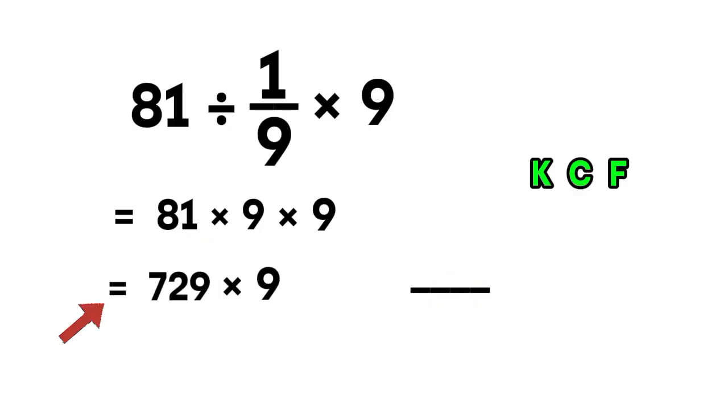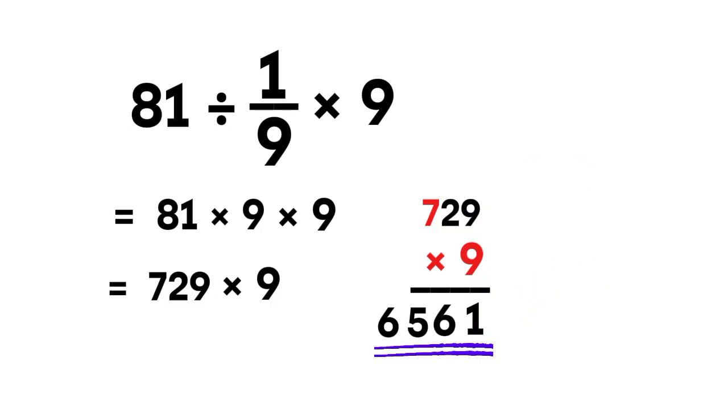Next, 729 times 9. 9 times 9 is 81. Write 1, carry 8. 9 times 2 is 18. Add the carried 8, we get 26. Write 6, carry 2. 9 times 7 is 63. Add the carried 2, we get 65. So the final answer is 6561.